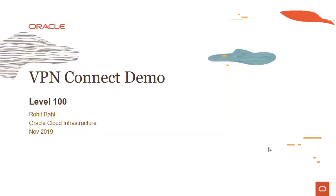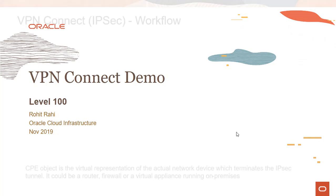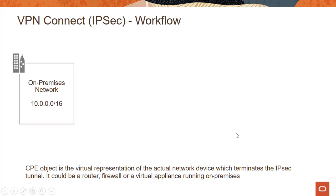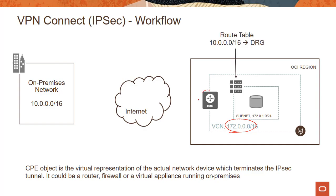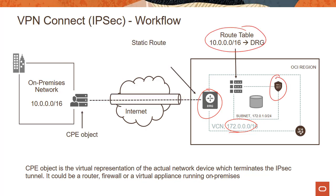Hi everyone, welcome to this module on a quick VPN Connect demo. As we saw in the previous module, we have an on-premises setup with an address space of 10.0.0.0/16, and an OCI setup with an address space of 172.0.0.0/16. We will create a DRG, update the route table, change some network security groups and security lists, create a static route, and IPSec tunnels, concluding by showing the IPSec tunnels are in an up state.